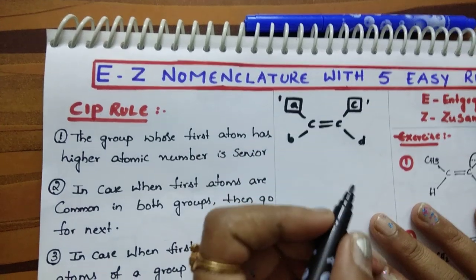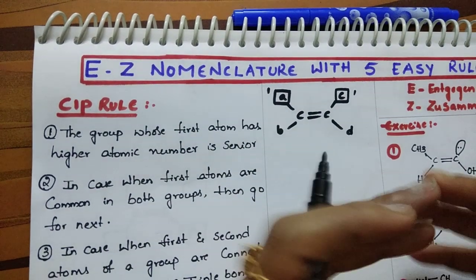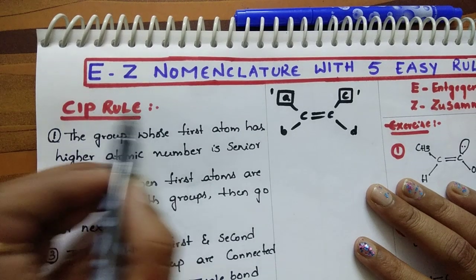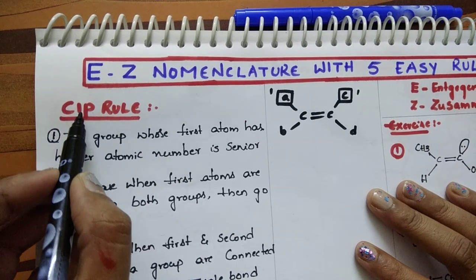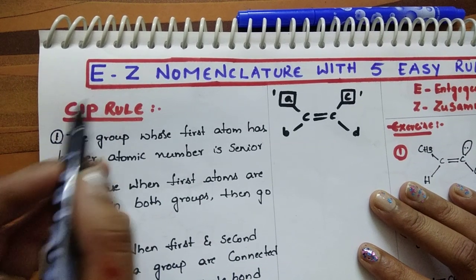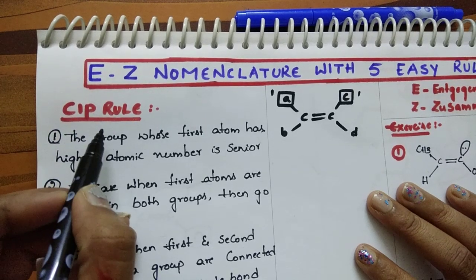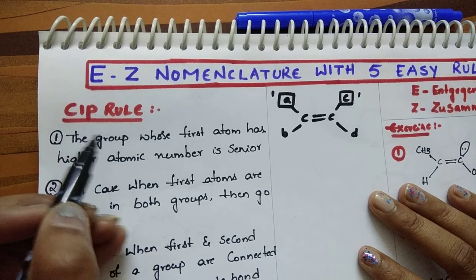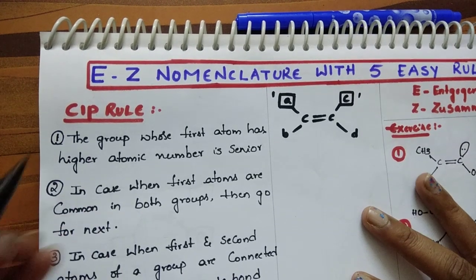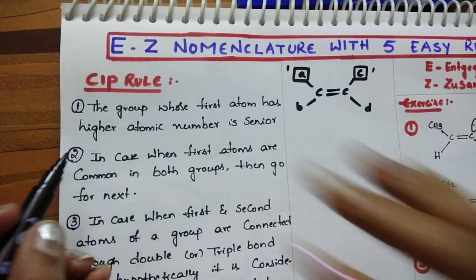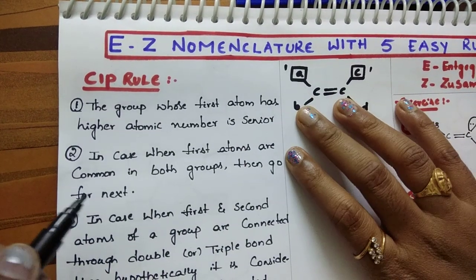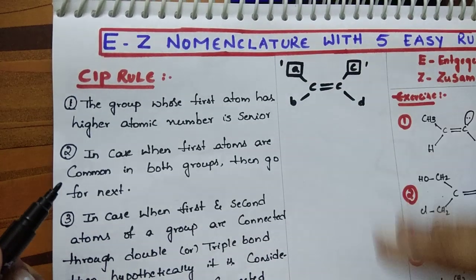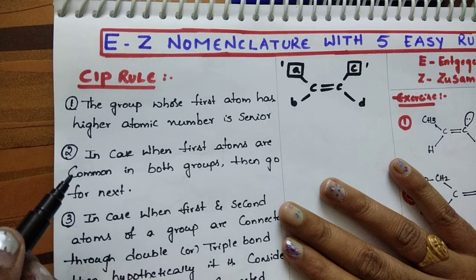Which is the senior group? How to find which group is a senior group? There are some rules. Those rules are called CIP rules — CIP means Cahn, Ingold, and Prelog, the names of three scientists who gave these rules. We also call them Sequence Rules or Priority Rules. There are 5 easy rules I am going to discuss, which are very helpful to find the E/Z nomenclature.